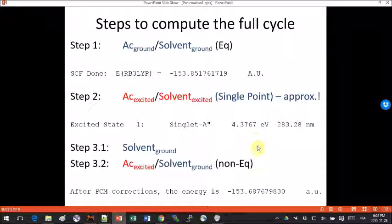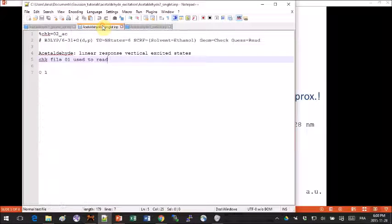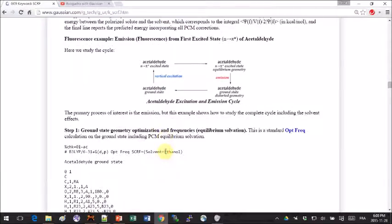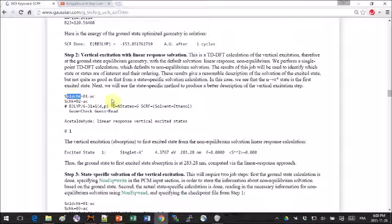Keep this in mind because we will compare this output with the output from a more careful calculation, which is step three. Now I just want to pay attention to the input for step two, because if you compare what I have here with what Gaussian provides as header, you will notice a crucial difference. It took me some time to figure this out. They use this keyword old checkpoint and new checkpoint, but my Gaussian crashes when I use this old checkpoint file keyword.